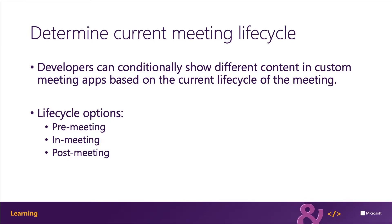Developers can conditionally show different content in a custom meeting app based on the current lifecycle of the meeting. The different lifecycle options include the pre-meeting experience, which is shown in the meeting details as a tab before the meeting starts or concludes; the in-meeting lifecycle, which is shown in the meeting's side panel or stage as a tab when a meeting is in process; and the post-meeting experience, shown in the meeting details as a tab after the meeting concludes.